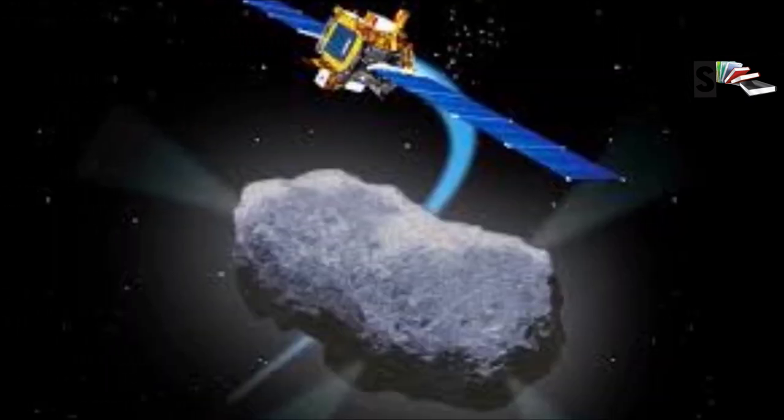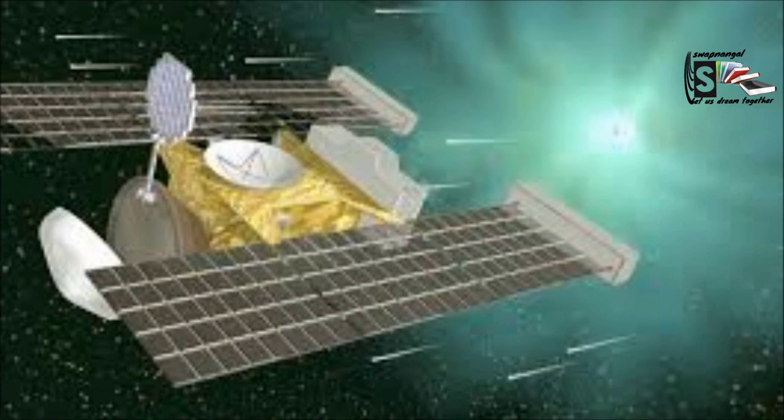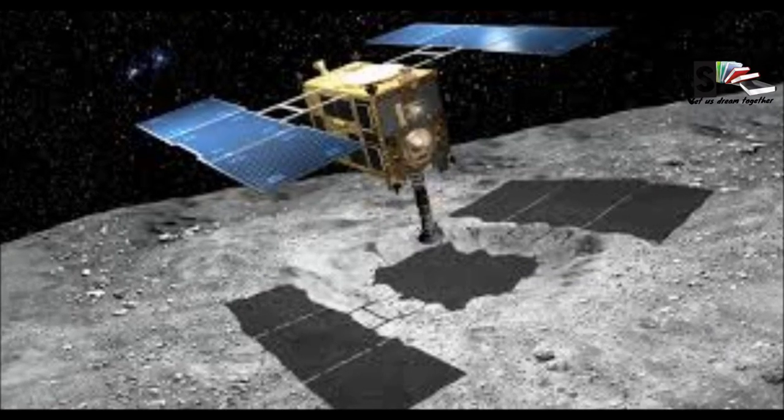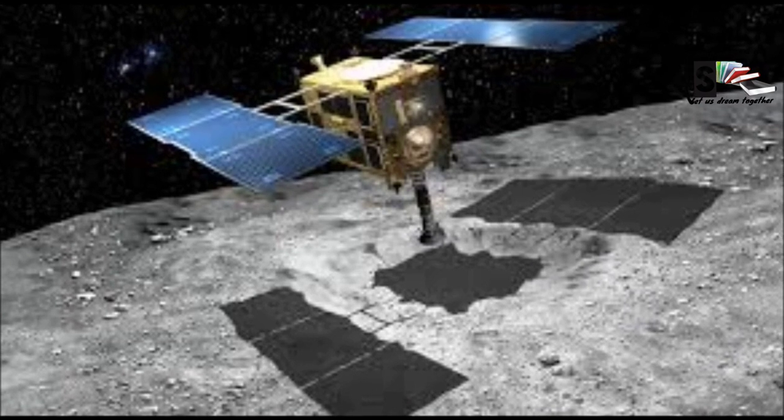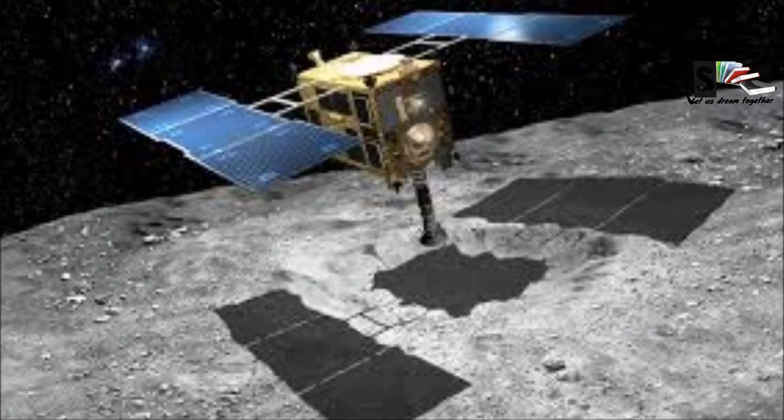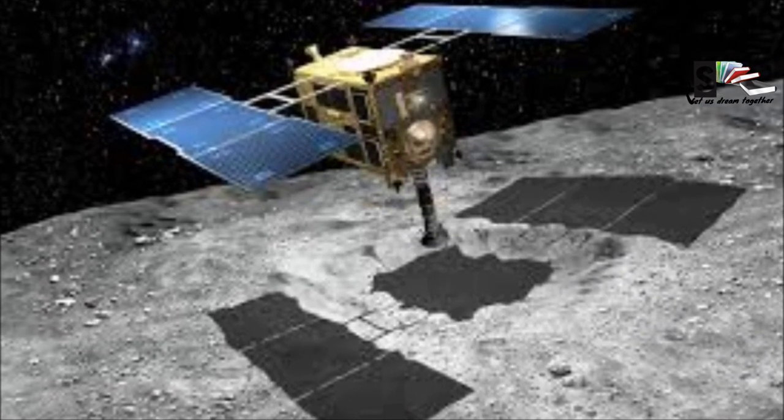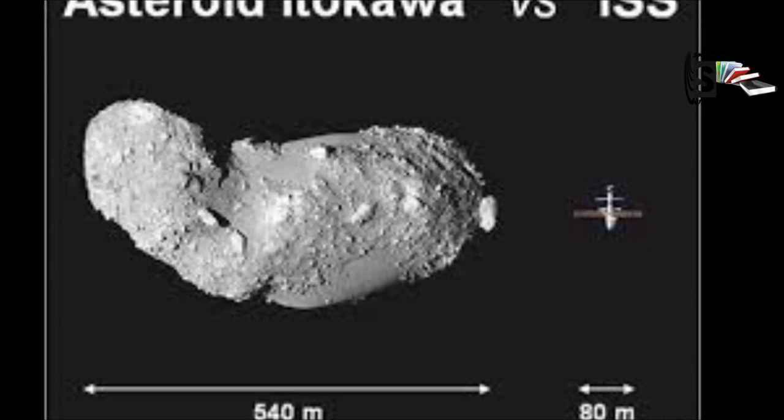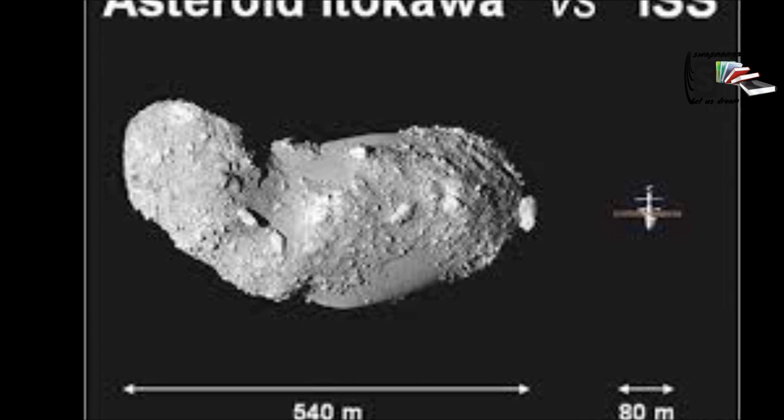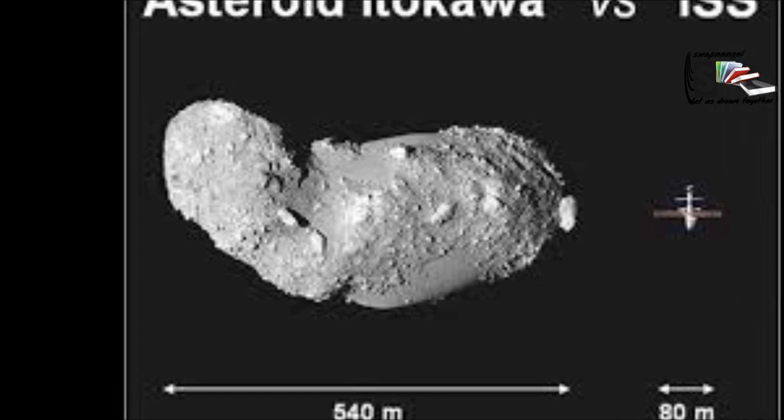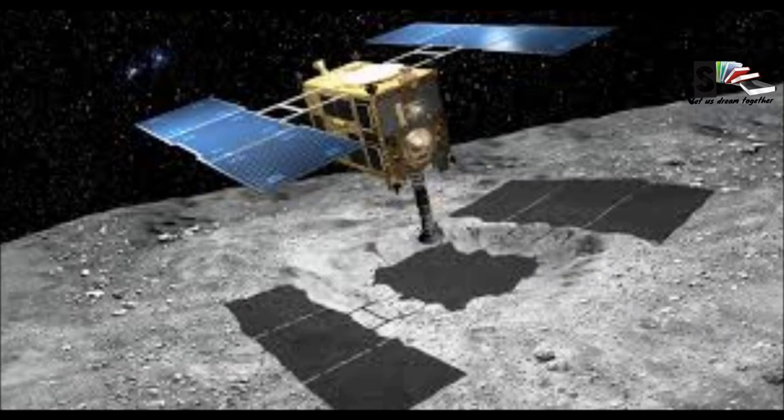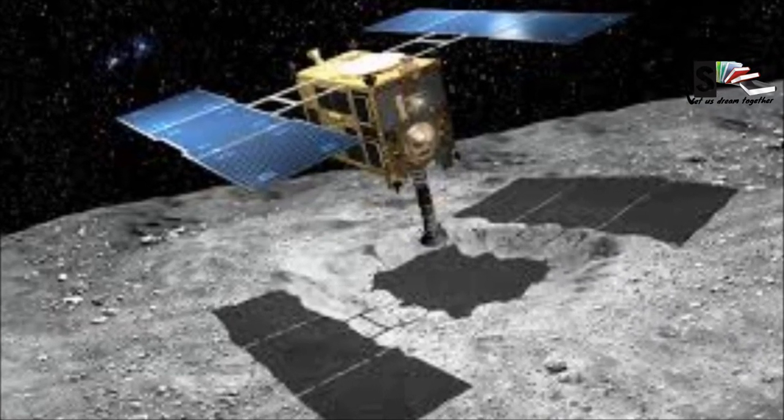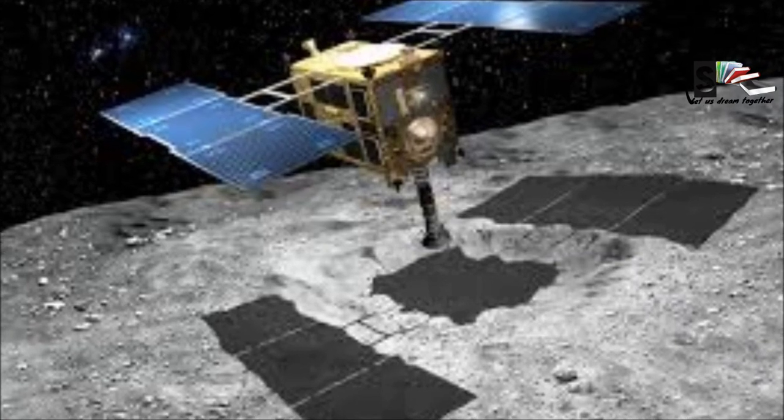Deep Space 1 and Stardust both had close encounters with asteroids. In 2005, the Japanese spacecraft Hayabusa landed on the near-Earth asteroid Itokawa and attempted to collect samples. On June 3, 2010, Hayabusa successfully returned to Earth. A small amount of asteroid dust is now being studied by scientists.